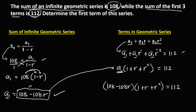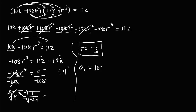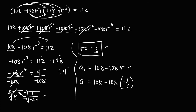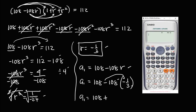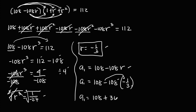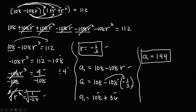Now to solve for the first term a sub 1, from the formula a sub 1 equals 108 minus 108r, and since r equals negative 1/3, we have a sub 1 equals 108 minus 108 times negative 1/3. Since negative times negative is positive, and 108 divided by 3 is 36, we have 108 plus 36. Therefore a sub 1, the first term, equals 144.